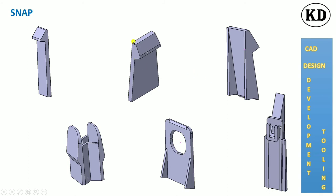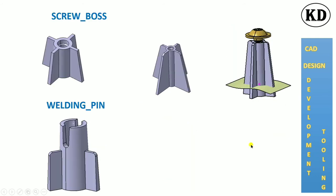There will also be an origin point, angle, and main tooling directions or orientation lines defined for the snap. There will also be ribs or a different structure provided.